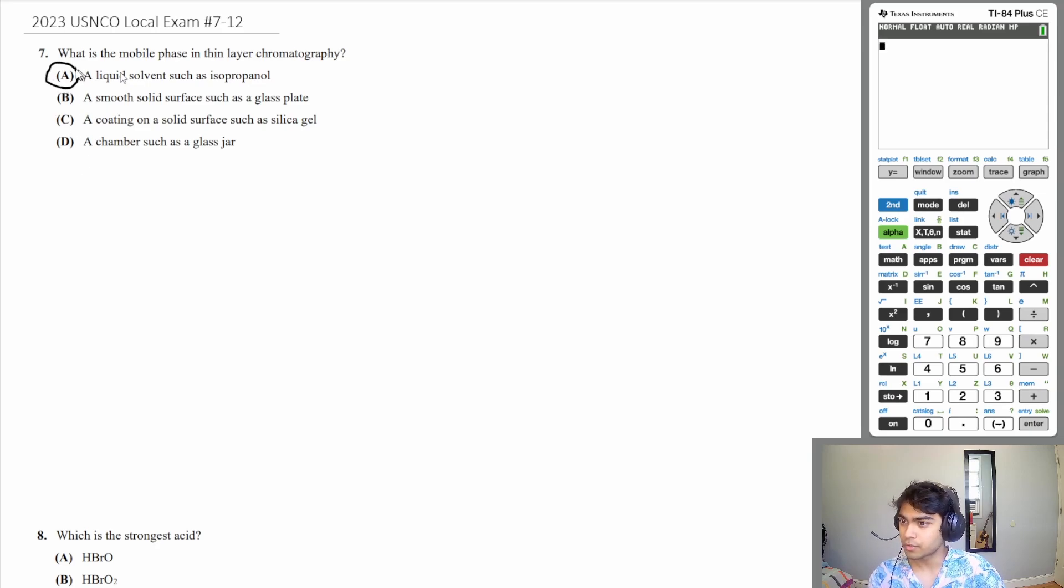But let's just make sure all the rest are wrong. B, a smooth solid surface such as a glass plate. That's solid. We don't want that. C, a coating on a solid surface such as silica gel. Also not a liquid. D, a chamber such as a glass jar. Also not a liquid. All right, so the answer for 7 is A.